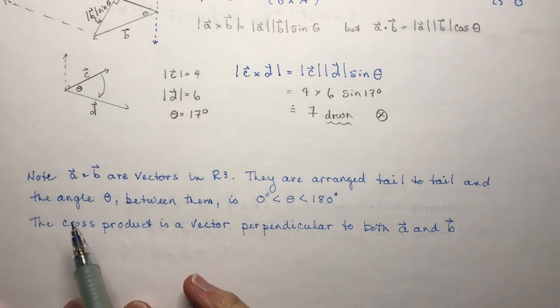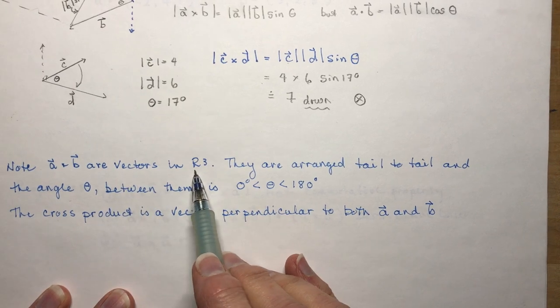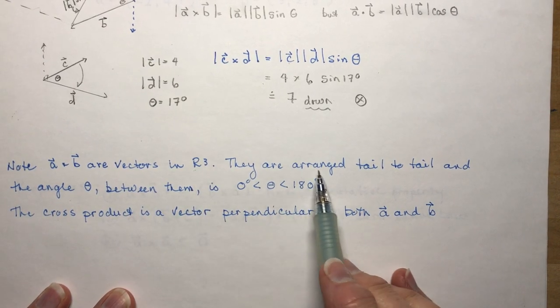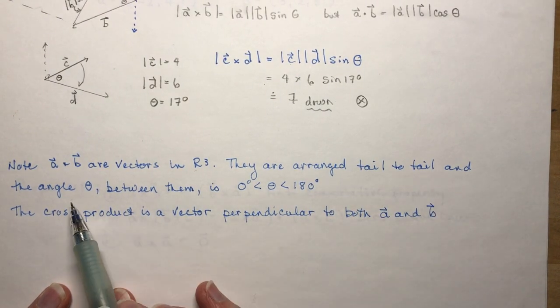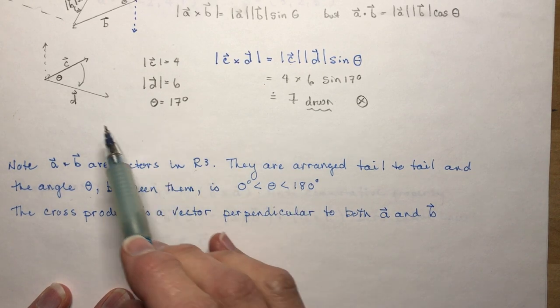So a few little notes note that vectors a and b are vectors in R3 we already said that they are arranged tail to tail and the angle theta between them is between 0 and 180 degrees.